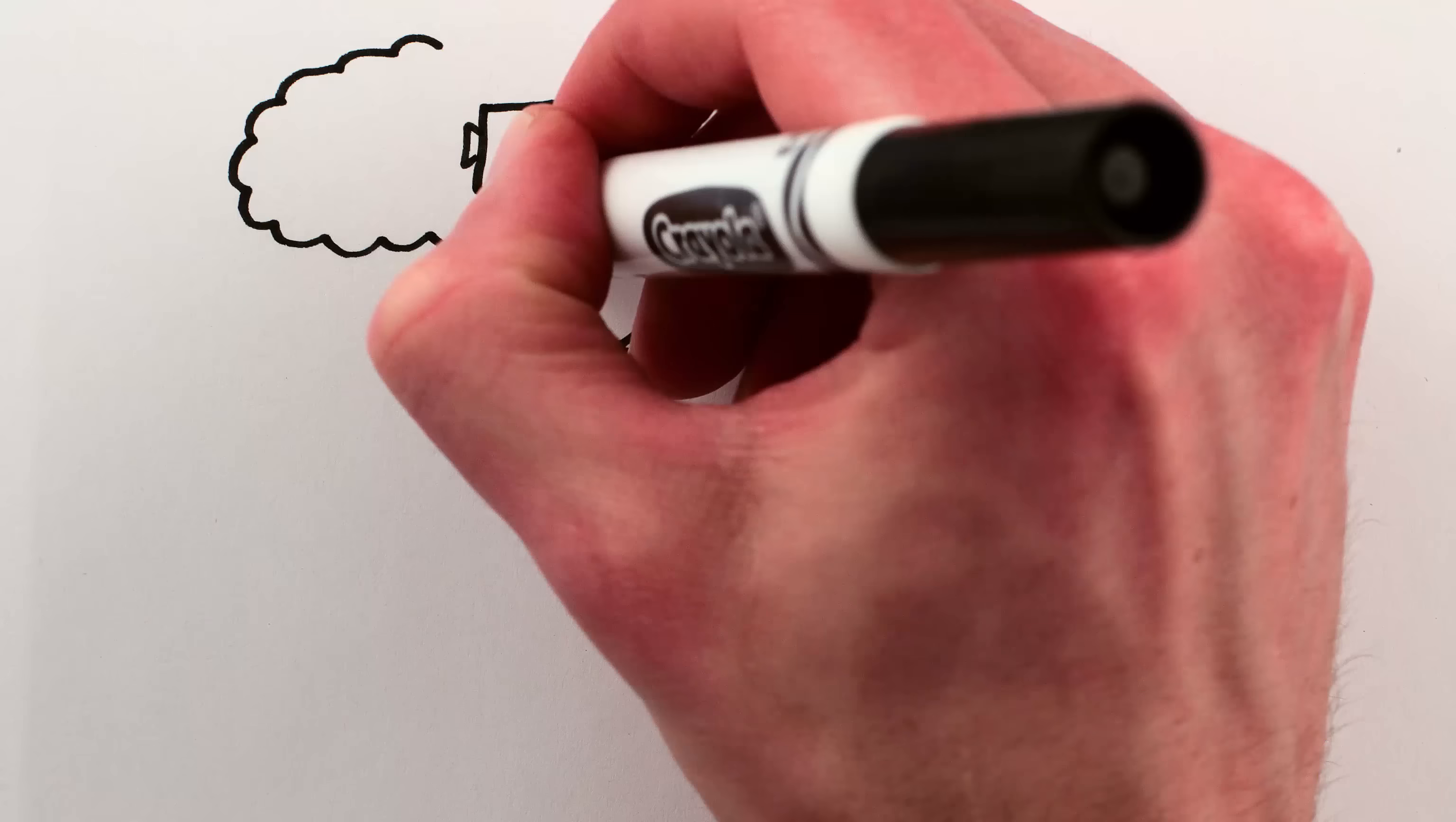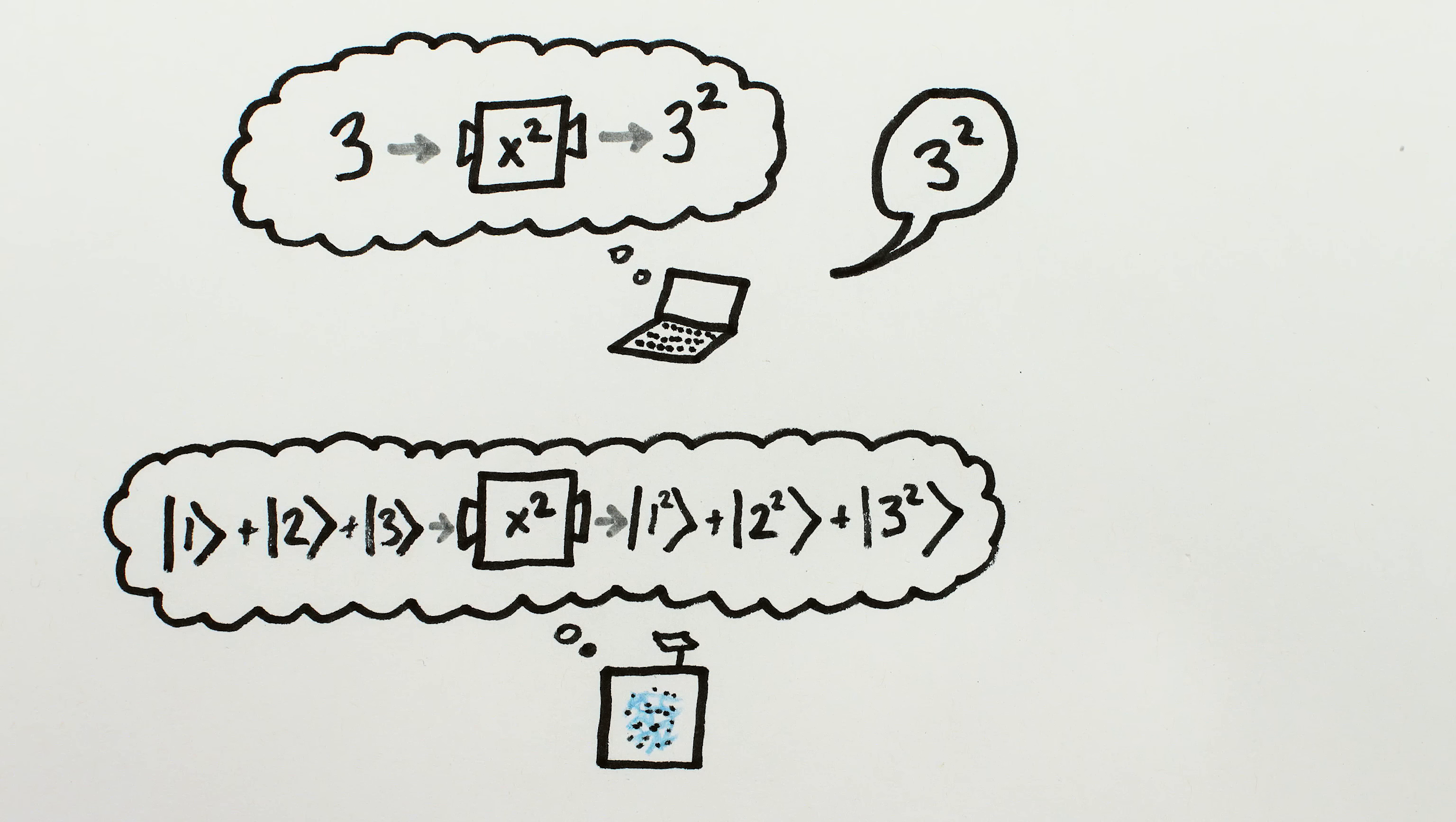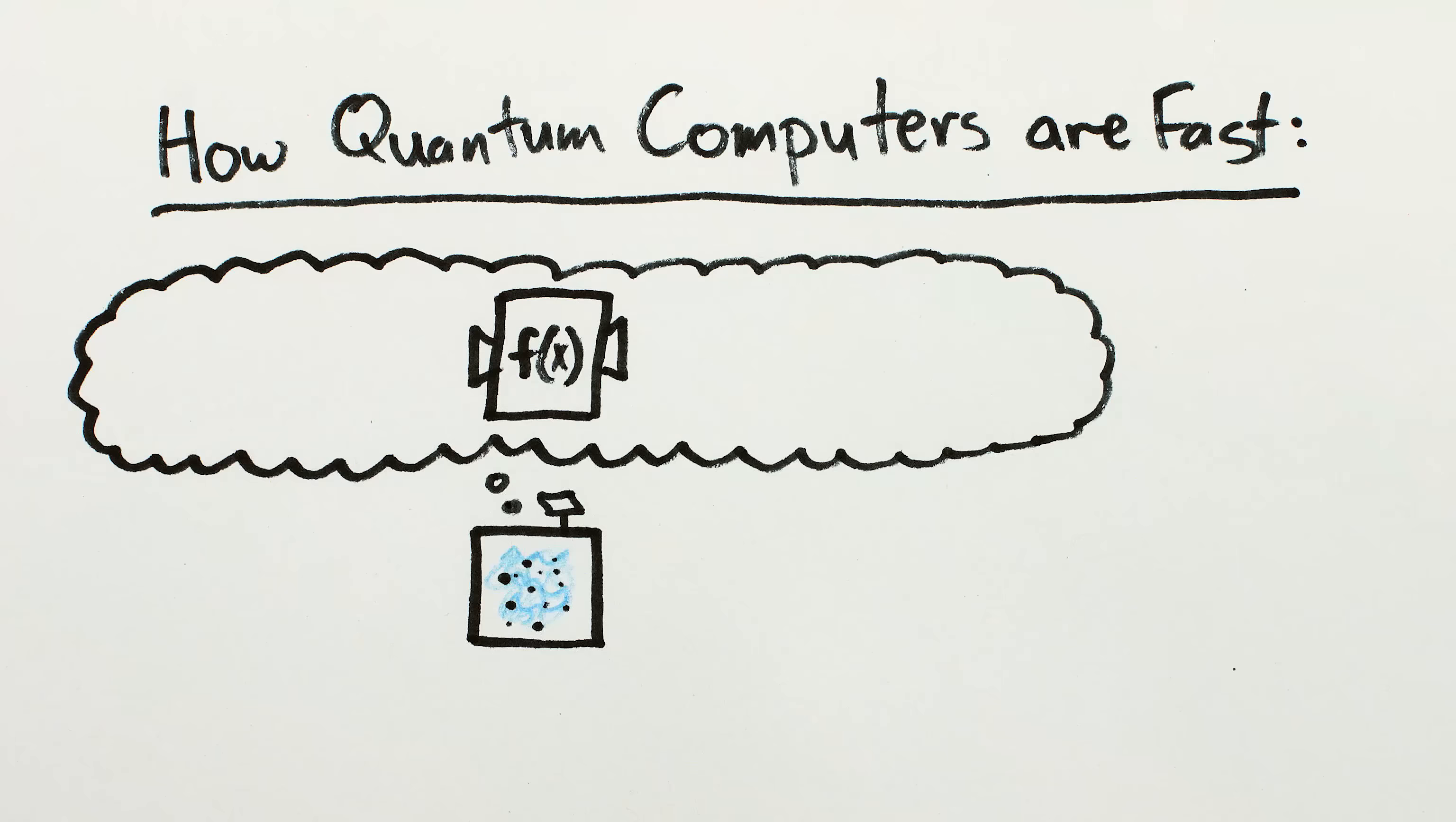Unlike a normal computation, which gives only one answer for a given input, a quantum computation can simultaneously calculate a bunch of possible answers for a single input by using a quantum superposition. But you only get one of the answers out at the end, randomly, with different probabilities for each one.